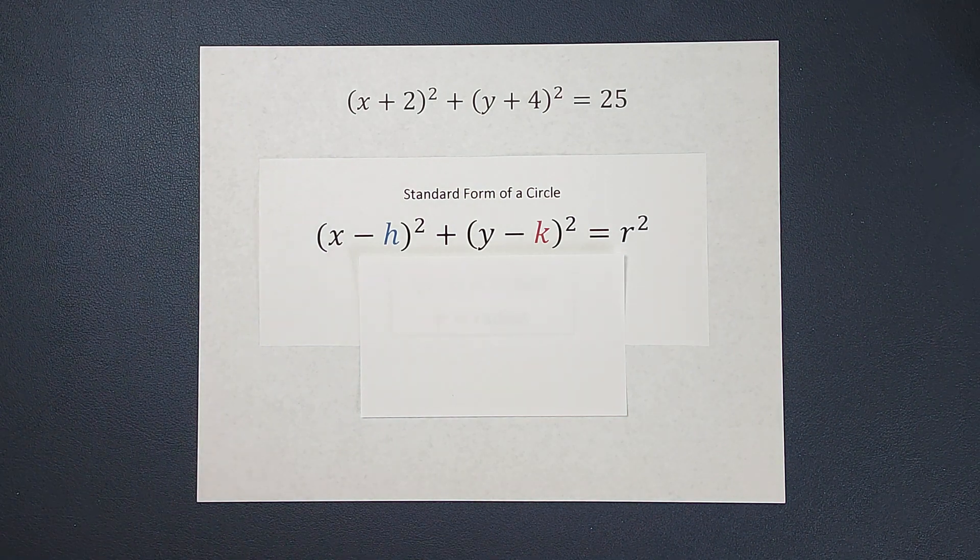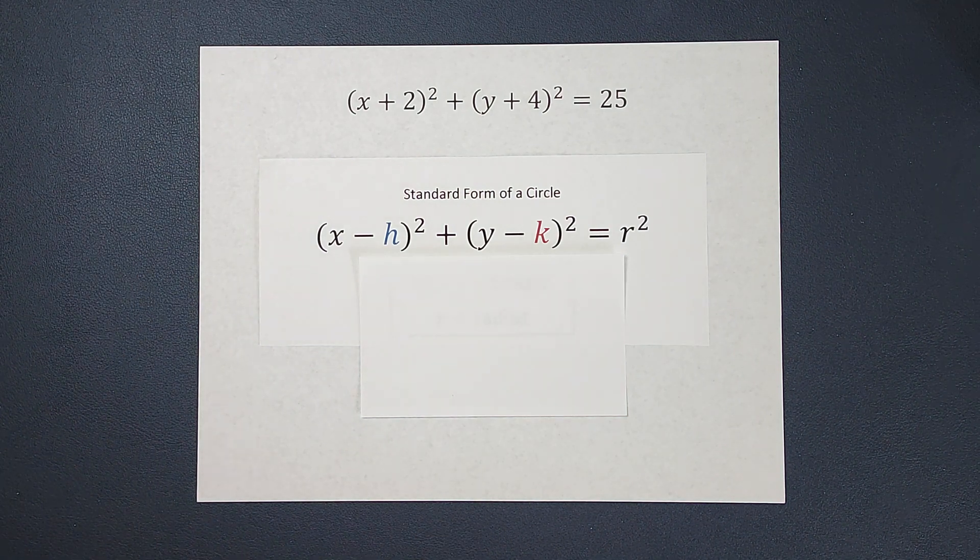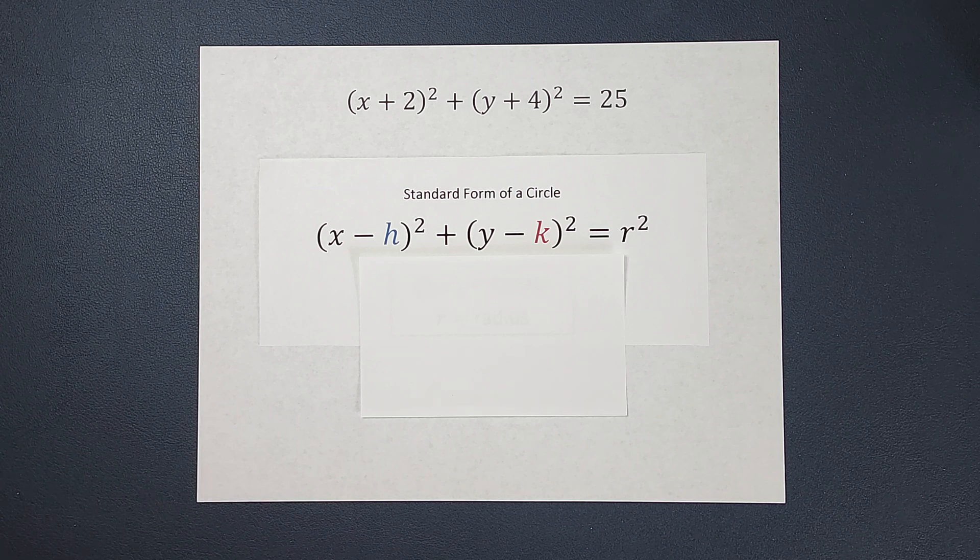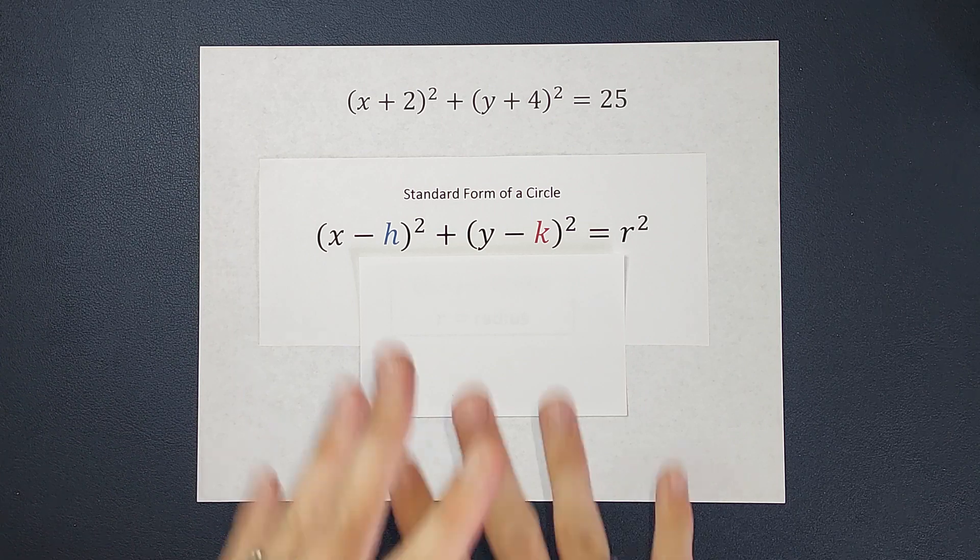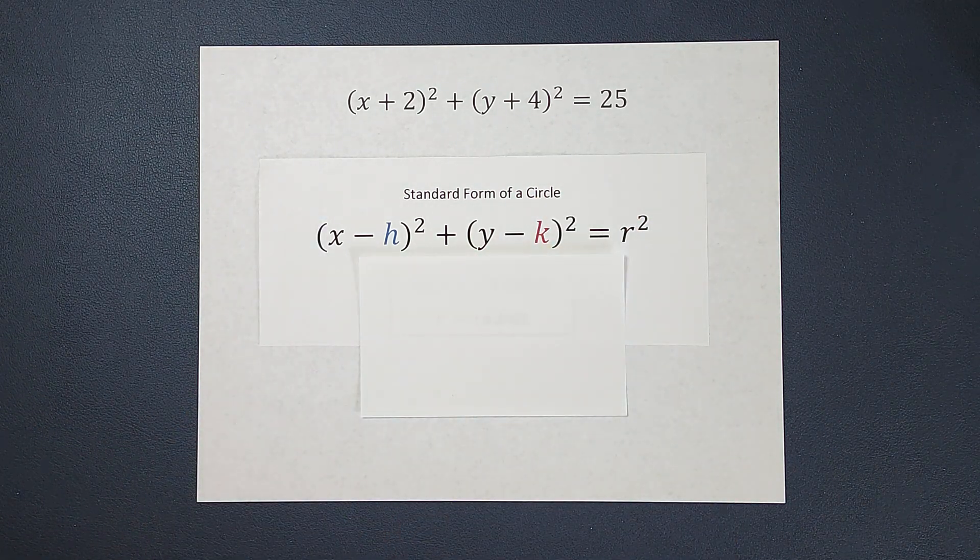This is very similar to if you've been graphing lines, y equals mx plus b, right? Slope intercept form. When you're in that form, it's very easy to graph the line. This is very similar, but we're talking circles now.